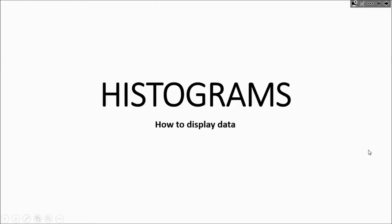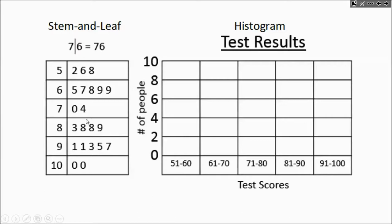How's it going? This video is going to be talking about histograms and how to display data in a histogram. So let's just go ahead and get started. So here we have a stem and leaf plot over on the left displaying numerical data. Hopefully you know how to read a stem and leaf plot. This 2 right here is actually representing 52. This 6 right here is actually representing 56 and so on.